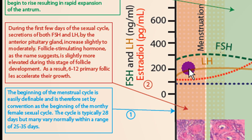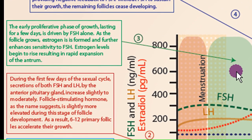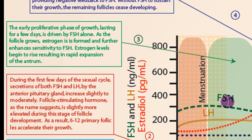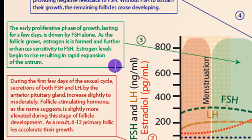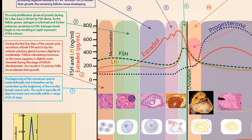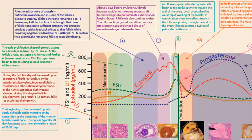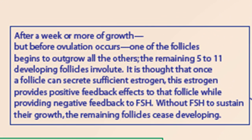FSH and LH begin to cause several follicles — around 6 to 12 — to accelerate their growth. This early stage is dominated by follicle stimulating hormone, which makes sense because we're stimulating a follicle, so FSH is a little bit higher than LH. As the egg develops it begins to release its own estrogen, so estrogen levels begin to rise, causing a rapid expansion of the antrum — the vacuole or empty space around the oocyte. One follicle begins to outgrow the others and starts releasing enough estrogen on its own to support continued growth. That estrogen feeds back to the anterior pituitary to stop releasing FSH and LH, which prevents the other follicles from continuing to grow.